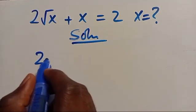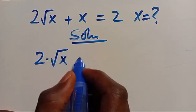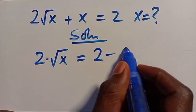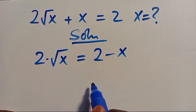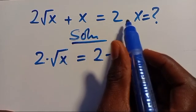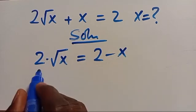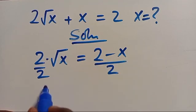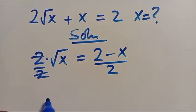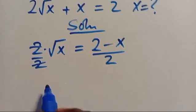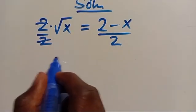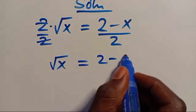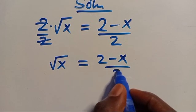So we have 2 multiplied by root X equals 2 minus X. By taking this X to the other side, then divide through by 2, so this will cancel out. Then we have root X equals 2 minus X, divided by 2.